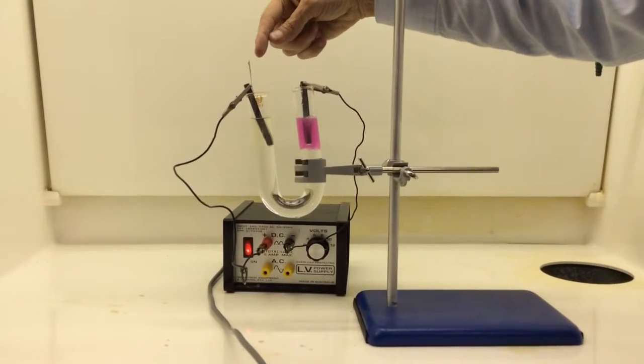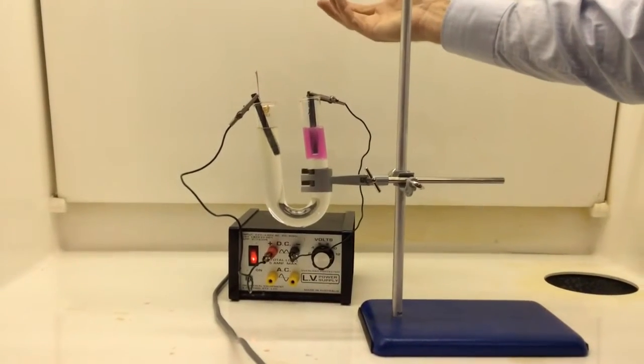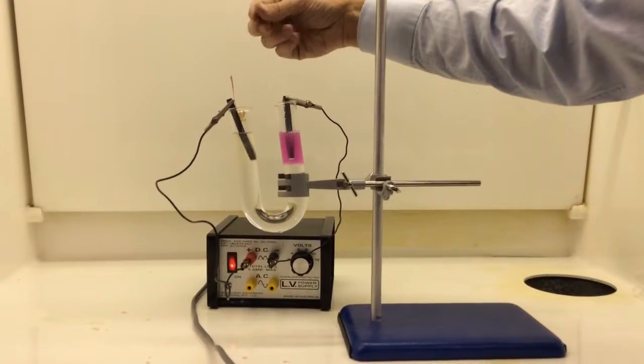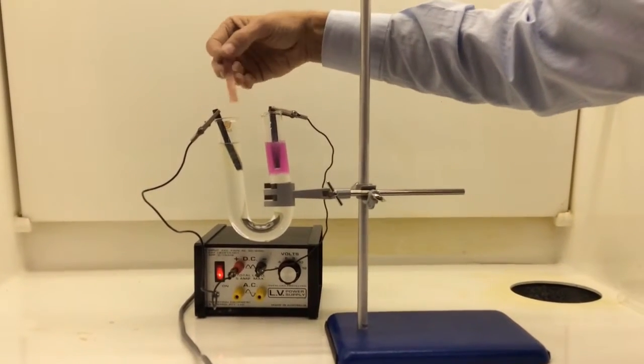What it's going to do to the litmus paper, it's not actually turning blue. There we go, it's just been bleached.